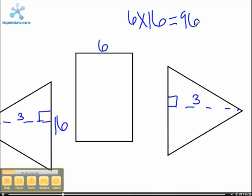Then we take the area of the triangles, which is 3 times 16, which equals 48, divided by 2. 48 divided by 2 equals 24.